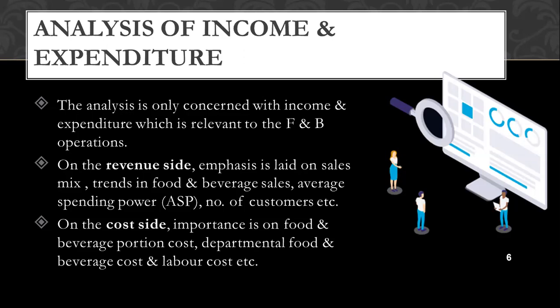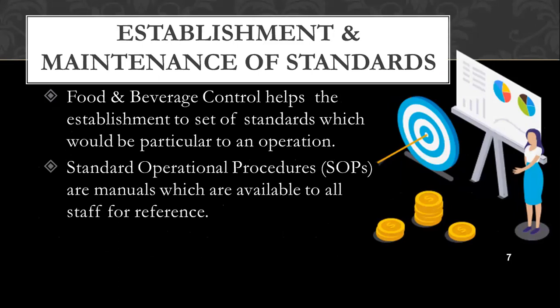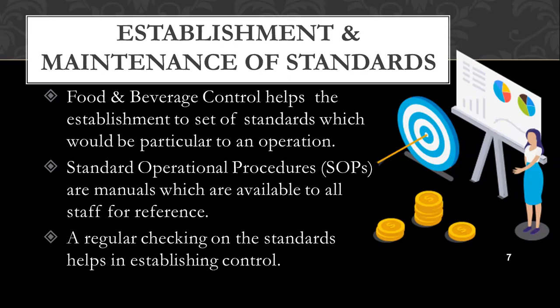The second objective is establishment and maintenance of standards. Food and beverage control helps the establishment to set the standards which could be used for a particular operation. These are called standard operational procedures, or SOPs in short. These are manuals available to all staff for reference. When you join a particular restaurant team, you will be given a bunch of SOPs that you are expected to read and understand. Regular checking on standards will help establish proper control.